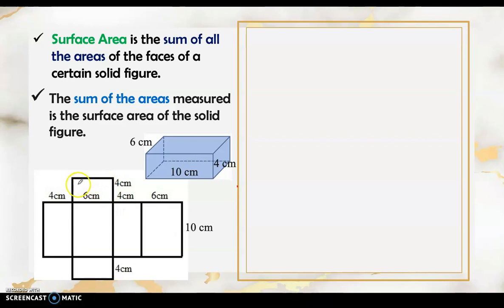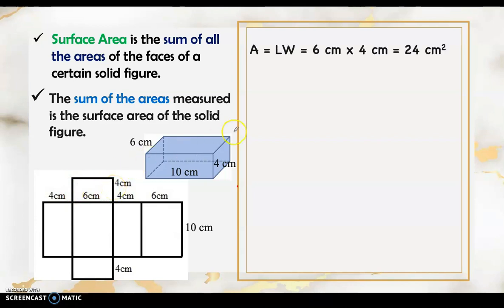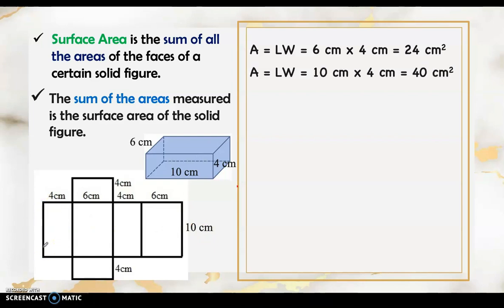What we're going to do is find the area of each shape. First, we find the area of this rectangle using length times width. The length is 6 centimeters and the width is 4 centimeters, so we have 6 times 4, giving us 24 square centimeters. Next is this rectangle: the width is 4 centimeters and this measurement is 10 centimeters, so that is 10 times 4.